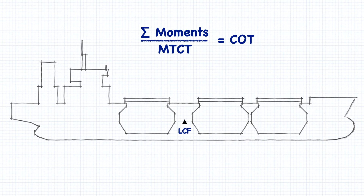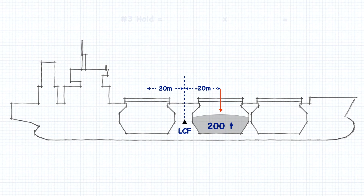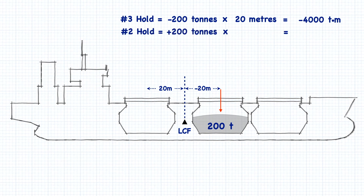You can use the same concept to calculate a change of trim when you shift weights on board. Let's say we started with the same 200 tons of cargo in the number 3 hold, 20 meters aft of midships. This time, instead of loading more cargo, we transfer that cargo from number 3 hold to number 2 hold, which is 20 meters forward of midships. We could do this calculation in two different ways. The first way is to calculate it as though we removed 200 tons from number 3 hold and added 200 tons to number 2 hold.